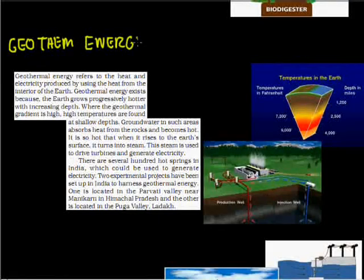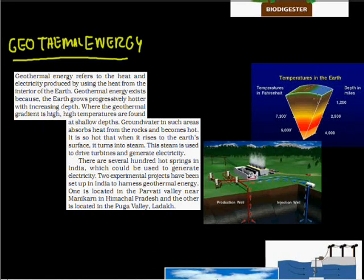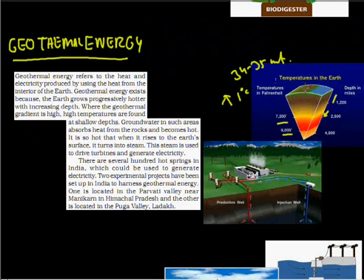The others are geothermal energy. As you can see here, as we go downwards to the earth, the temperature increases. You can see here that how much temperature, more than 9000 degree centigrade temperature under the, if we go under 4000 miles. Actually the ratio of it is in the crust. Only in crust it is 34 to 35 meter. If we go inside, the temperature increases 1 degree centigrade. In the crust, the rate is like this. So this is how we can use this heat also.